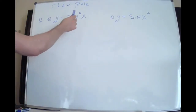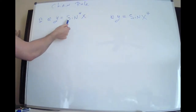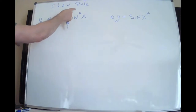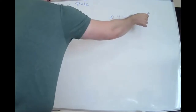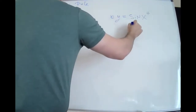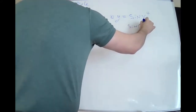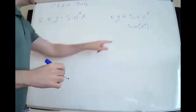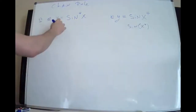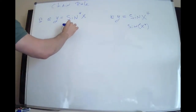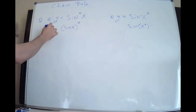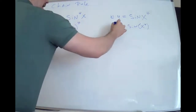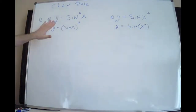I put two examples up at the same time. Even though they look similar, they're different: in the first, the 4 is attached to the sine, so it's sine to the fourth of x — that's sine(x) multiplied four times. In the second, the 4 is attached to the x, so it's sine of x to the fourth. They look similar but they are not the same.